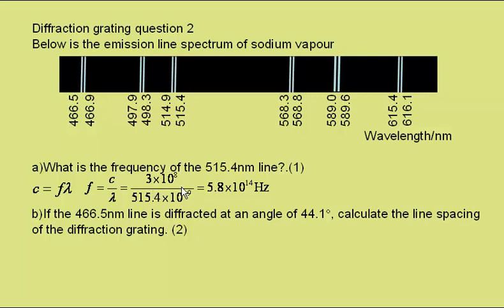times 10 to the 8 metres per second divided by wavelength 515.4, and nano means 10 to the minus 9, giving a frequency of this line of 5.8 times 10 to the 14 hertz.